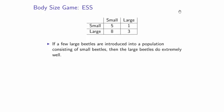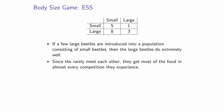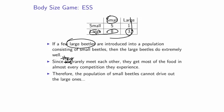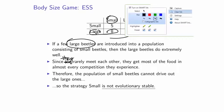Let's examine this in the context of evolutionary stability. Since large beetles rarely meet each other, they get most of the food in almost every competition they experience. When large meets large, there is a significantly smaller payoff compared to when large meets small. Since large doesn't meet large that often, they have an evolutionary advantage. The population of small beetles cannot drive out the large beetles — so the strategy 'small' is not evolutionarily stable.